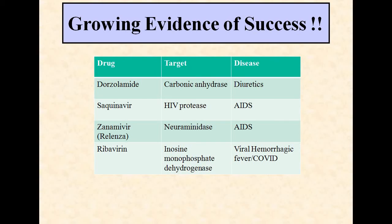There is growing evidence of the success of docking through various approved drugs. One example is an HIV protease inhibitor used in the treatment of AIDS. Oseltamivir (Tamiflu) is a neuraminidase inhibitor, and Ribavirin is an inosine monophosphate dehydrogenase inhibitor used in the treatment of viral hemorrhagic fever. Ribavirin is also used in the treatment of COVID, which is a growing evidence for docking studies.